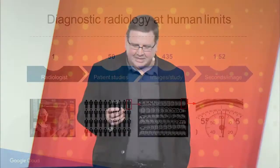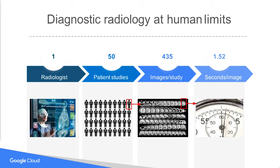I want to highlight that radiology is approaching human limits. As a modern cross-sectional radiologist interpreting MRI or CT scans, on any given day a radiologist will take care of about 50 patients. Each study has numerous images — a simple study on the order of 100, a complex study up to about 1,200 images, with an average of about 400. Add that up over a typical nine-hour day: that's about 32,400 seconds, roughly 20,000 images, about 1.5 seconds to evaluate each image. The only way to scale this traditionally is to have more radiologists, which is not the case globally.